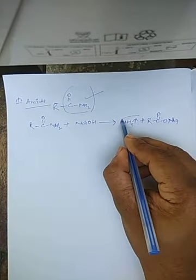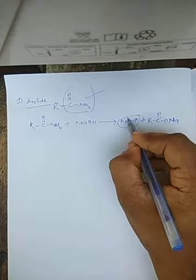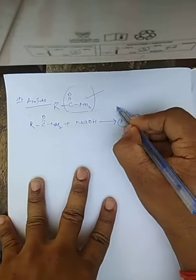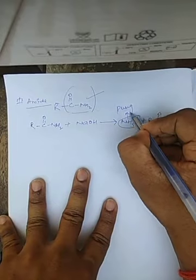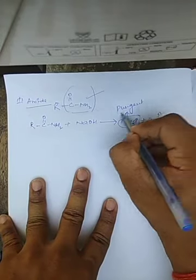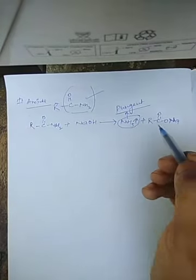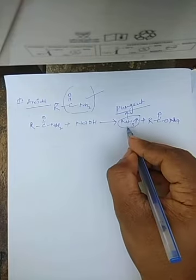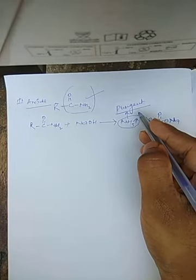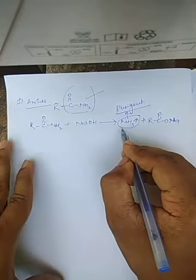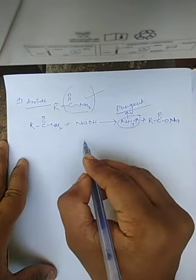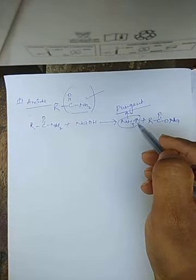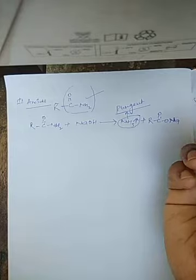This ammonia gas has a very characteristic pungent-like smell. Ammonia produces a pungent smell, and this gas can be characterized by its smell. It can also be confirmed whether the evolved gas is ammonia or not.